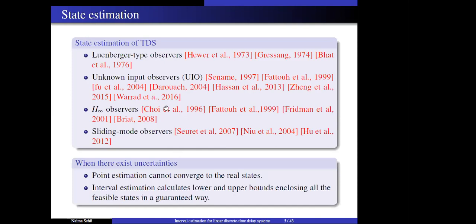Point estimation cannot converge to the exact value of the state vector when unknown uncertainties exist in system dynamics. In contrast, interval estimation provides an alternative, as it can handle systems with uncertainty terms, provided that bounds of the uncertainty terms are known. The interval estimation approach can provide two estimates — lower and upper — which can bound the measured state variables. Even though asymptotic estimation of the unknown state vector is not possible, at any instant of time we can compute the lower and upper bounds enclosing the feasible state space.